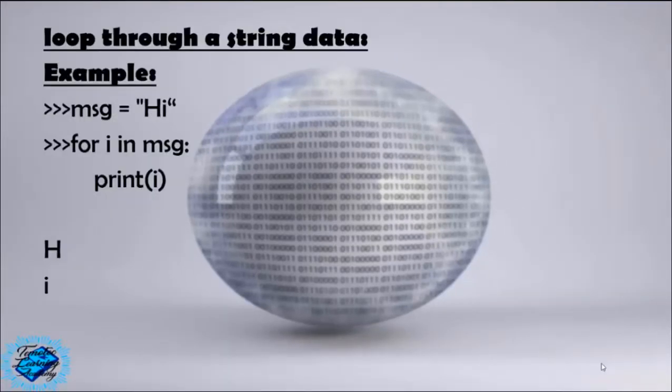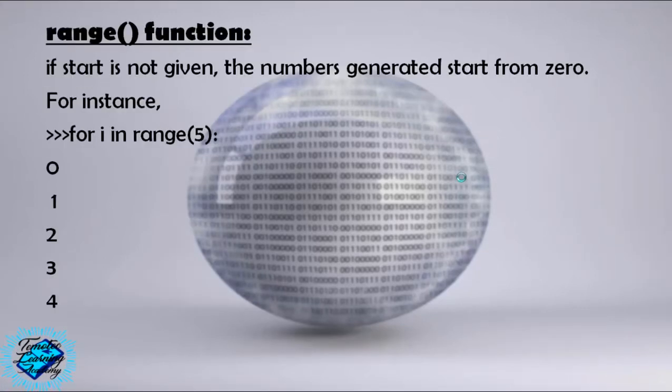You can also loop through a string. Example: msg = 'hi'. For i in msg: print(i) — you will get 'h' and 'i'. To loop through a sequence of numbers, the built-in range function comes in handy.